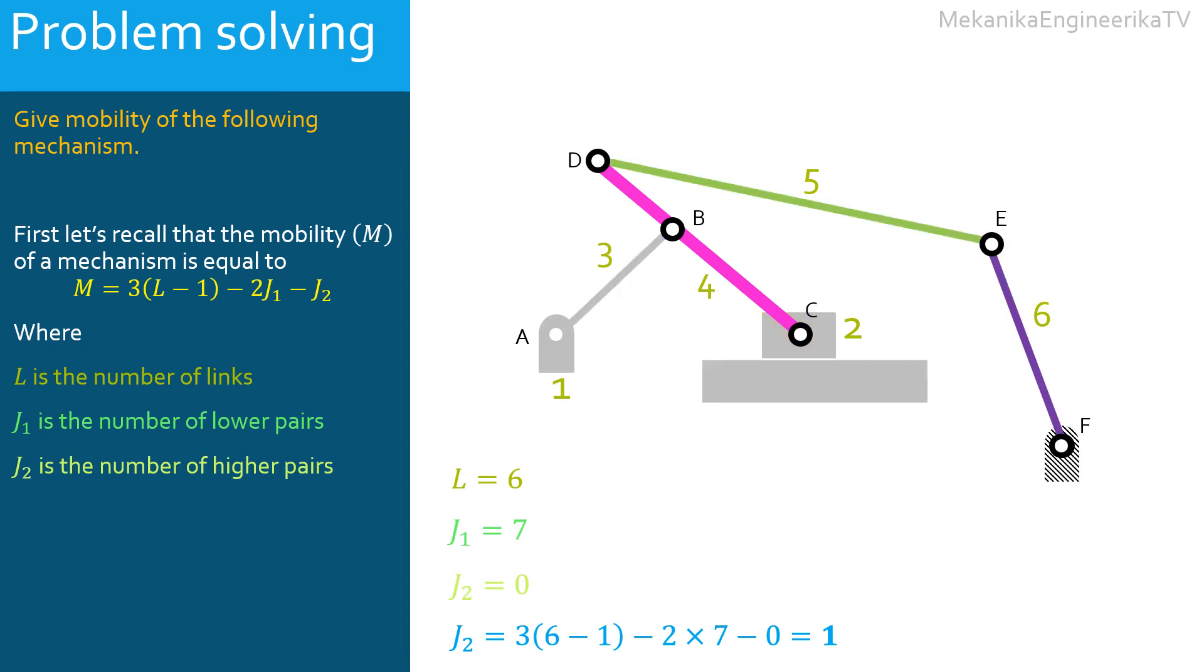And now if we focus on the links 4, 5, 6, and CF, they build a 4-bar mechanism of which mobility is equal to 1. Once the link CD motion is controlled, the motions of the other bars in this mechanism are unique and controlled.